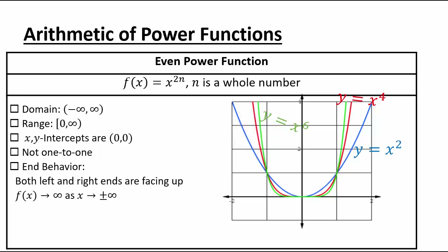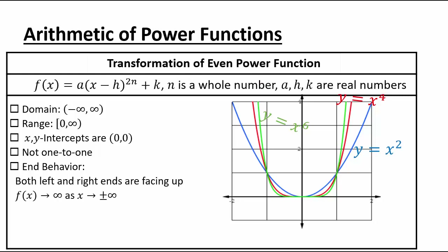We saw that transformation of functions is what happens when you do arithmetic with constants. So, for example, a transformation of even power functions looks like some coefficient a times x minus h to the even power plus k. The a controls vertical stretch or compression, h controls left-right movement, and k controls up-down movement.